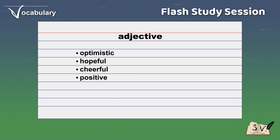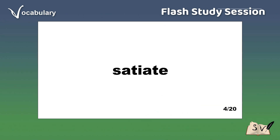Sanction: Permission. Approval. Consent. Sanguine. Optimistic. Hopeful.